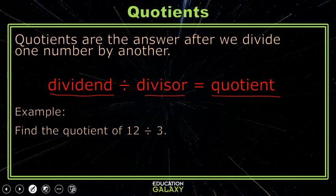Well, if we use our fact families, we can write a related multiplication fact of 3 times what equals 12. But we know 3 times 4 equals 12, so that means our quotient is 4.